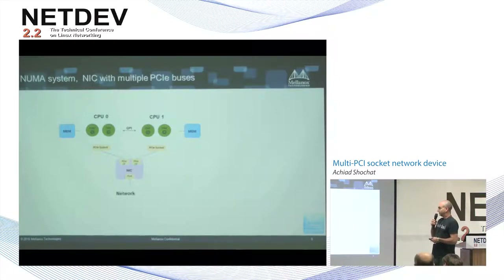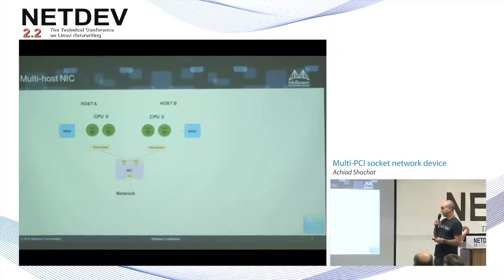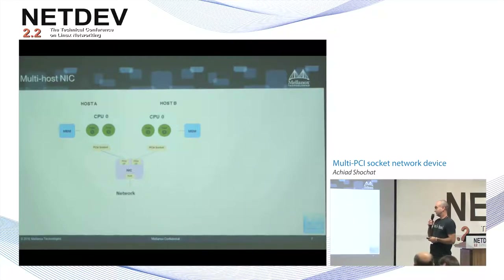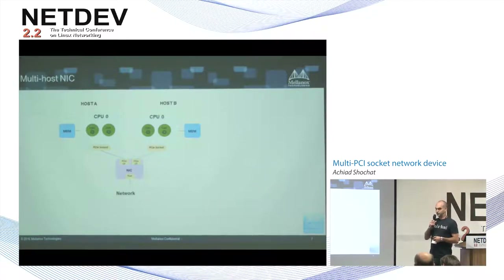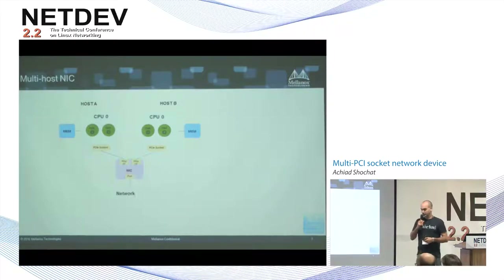With a NIC with multi-PCI buses, you can see how this issue can be resolved. The third use case is what we call a multi-host NIC, which is a single network port that serves multiple servers — just different servers. This way you can save lots of money for network ports in the system.